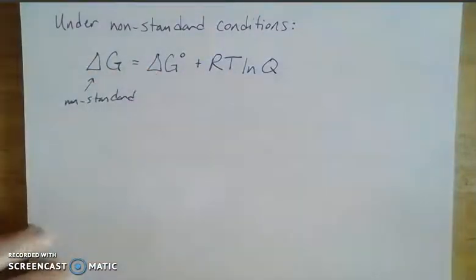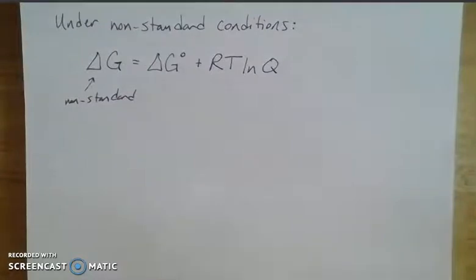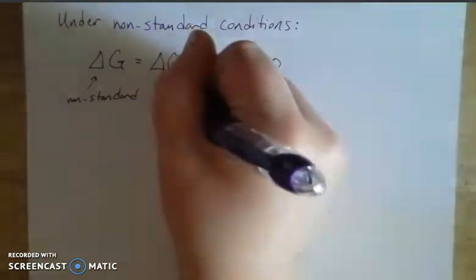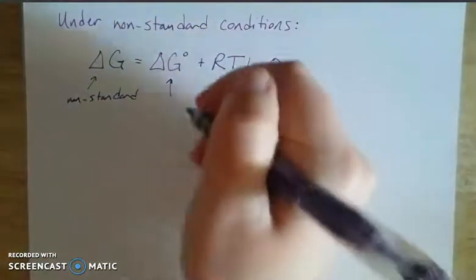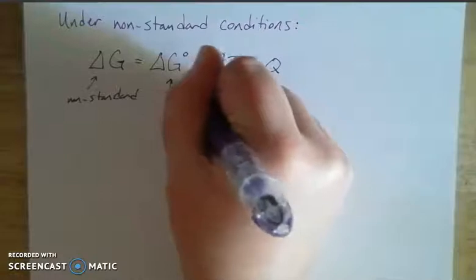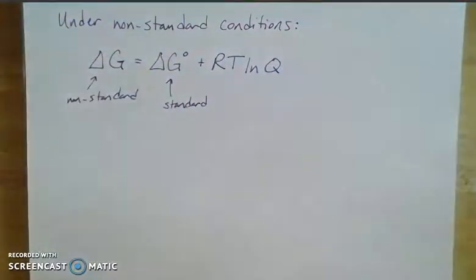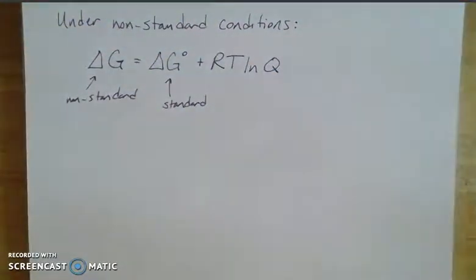And of course, standard conditions from a thermodynamic standpoint really has most to do with temperature. So that would be at 25 degrees Celsius, is equal to the change in Gibbs free energy at standard conditions. And we can tell by that degree symbol, which just means that it's under standard conditions.